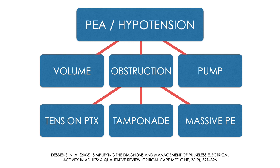The 3-plus-3 rule refers to volume, obstructive causes, and pump failure. There are three main obstructive causes: tension pneumothorax, tamponade, and massive PE. Your other H's and T's are all still embedded here — hypokalemia and hypothermia will cause pump failure, for example. Your volume issue can be absolute, as in hemorrhage, or relative, as in severe vasodilation in sepsis or anaphylaxis.